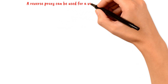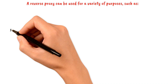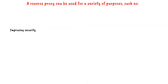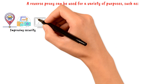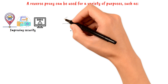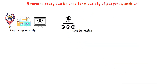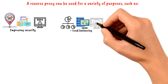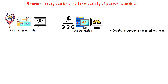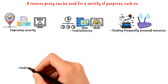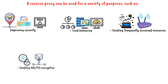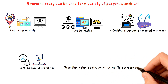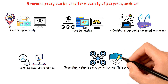A reverse proxy can be used for a variety of purposes, such as improving security by hiding the actual IP address of the server and protecting against attacks such as DDoS (Distributed Denial of Service), load balancing by distributing incoming requests to multiple servers to improve performance and reduce downtime, caching frequently accessed resources, enabling SSL/TLS encryption to secure traffic between clients and servers, and providing a single entry point for multiple servers or applications to simplify management and improve security.